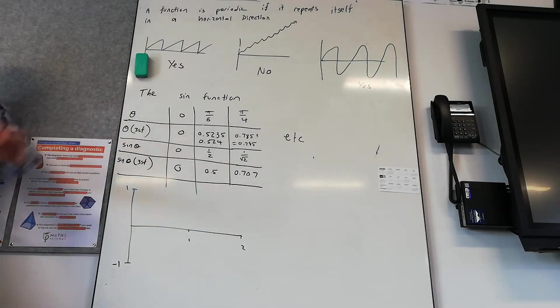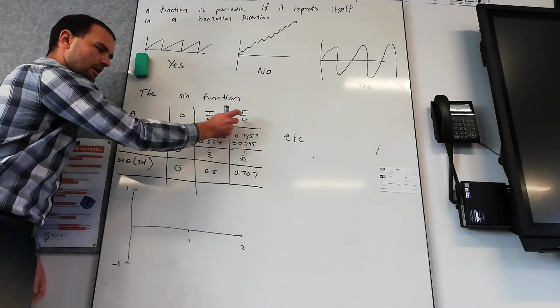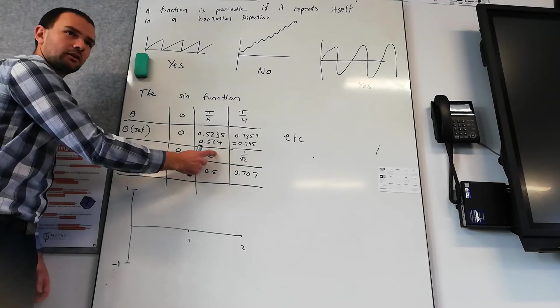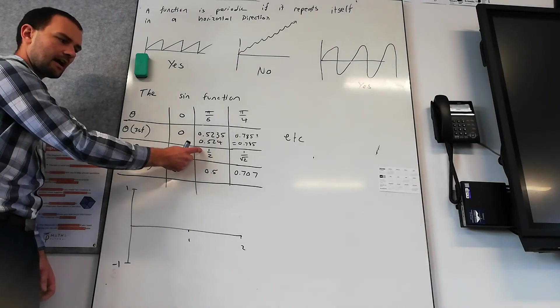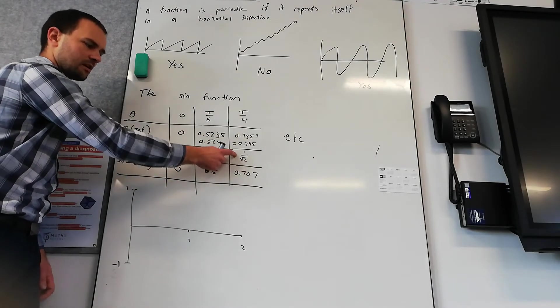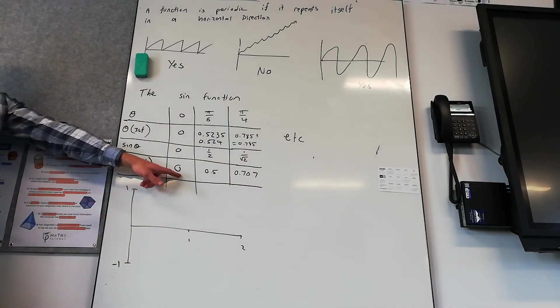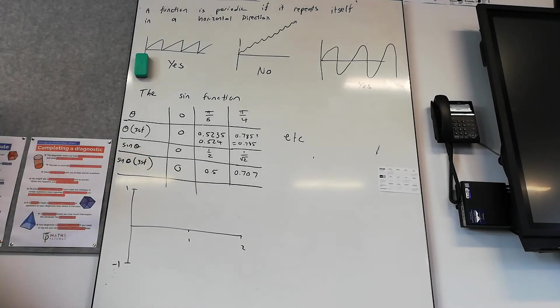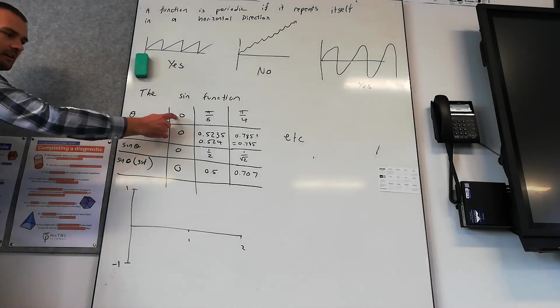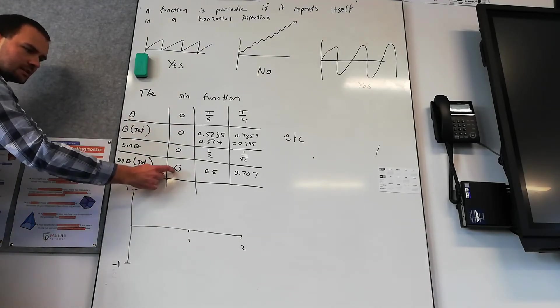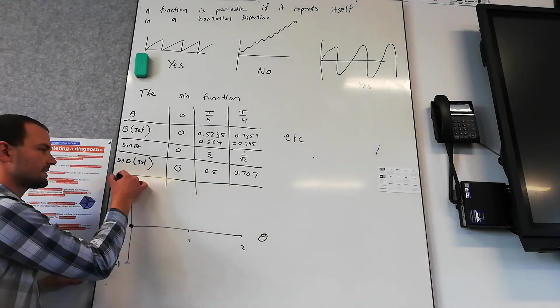Then we've got what is the value of sine theta. That means given the angle, what is the y-coordinate. For 0 degrees the y-coordinate is 0. For pi on 6 the y-coordinate is half. For pi on 4 the y-coordinate is 1 on root 2. Then I've expressed the y-coordinate to three significant figures. What we're going to do is plot this on the axis we've got. On this axis I've got theta. On this axis I've got sine theta.